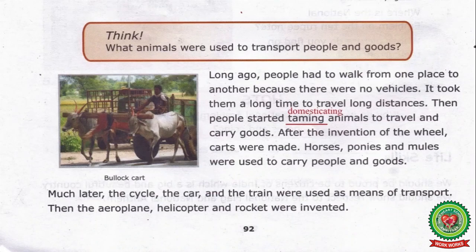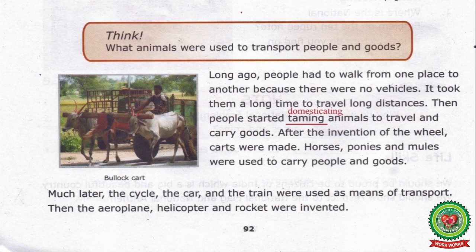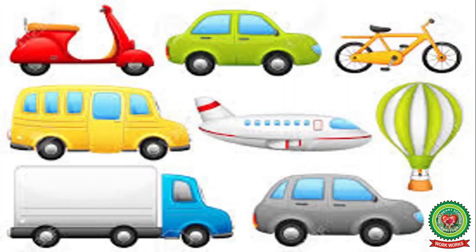After the invention of the wheel, carts were made, and horses, ponies, and mules were used to carry people and goods. Much later, the cycle, the car, and the train were used as means of transport. Then the aeroplane, helicopter, and rocket were invented. With the invention of the wheel, there has been a lot of innovation and development — wheels were initially used in carts, then in cars, bicycle, train, aeroplane, etc.